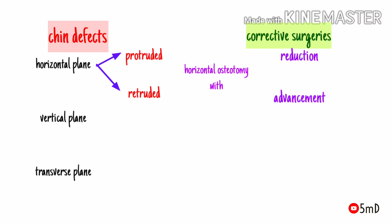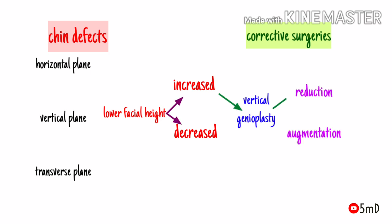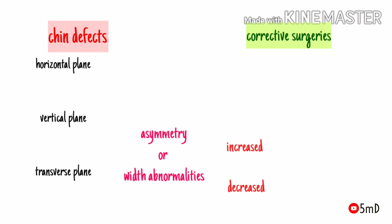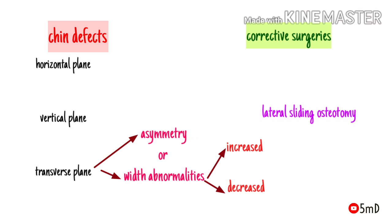In the vertical plane, depending on the defect, there could be either vertical reduction genioplasty or vertical augmentation genioplasty. Similarly, in the transverse plane, there could be asymmetry or either decreased or increased width of the chin. Decreased width is corrected by placing a graft in between to increase width; increased width is corrected by cutting a bone piece and bringing them closer, whereas asymmetry is corrected by lateral sliding osteotomy.